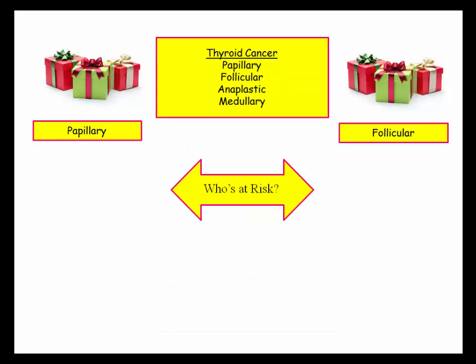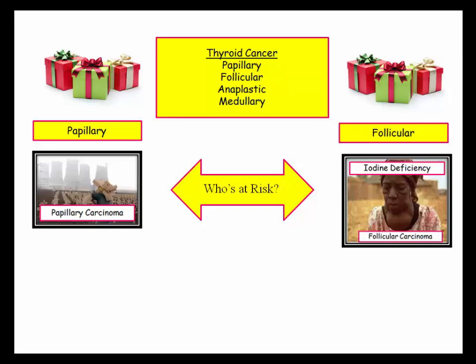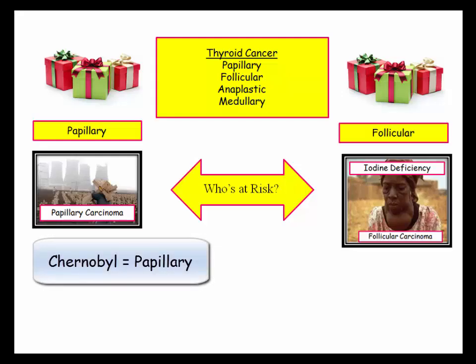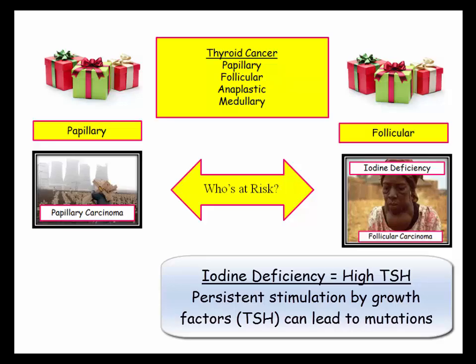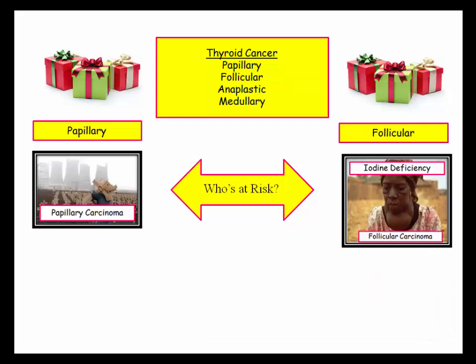That brings us to papillary and follicular. Here's what you need to know. First, who is at risk? This isn't subtle, and they do include the information in the question stem. The other key distinguishing point, besides the pathologic description, is the pattern of spread. This is another fun little toy they like to play with.